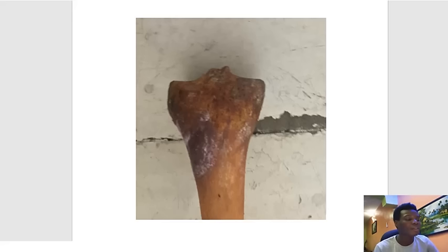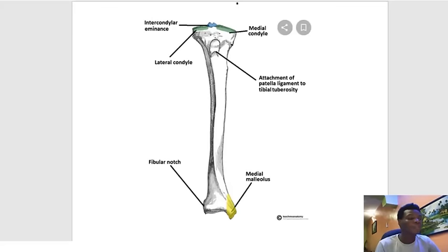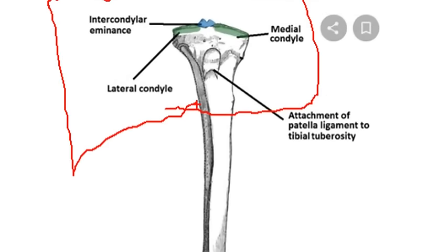Now let's move to the tibia. What we have here is the proximal part of the tibia. On the lateral side is the lateral condyle of the tibia, and on the medial side is the medial condyle of the tibia. In between is the intercondylar eminence, also called the intercondyloid fossa — either name is fine.